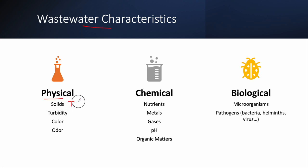A raw wastewater is full of solids, also commonly known as TSS or Total Suspended Solids, that we need to highly reduce. Raw sewage also has high turbidity due to the solids components, and it has colored water — we need to reach transparent and non-turbid water as an end result. There are also bad odors, and our treated water must have no odor at all.